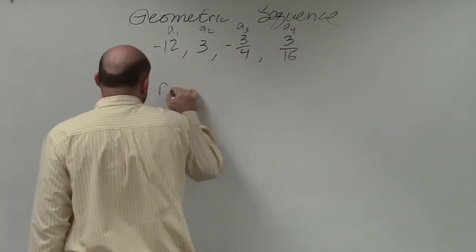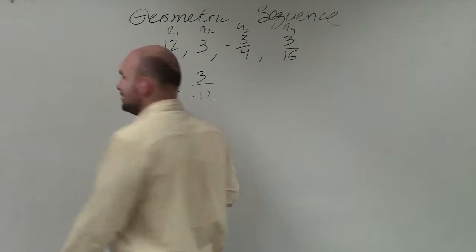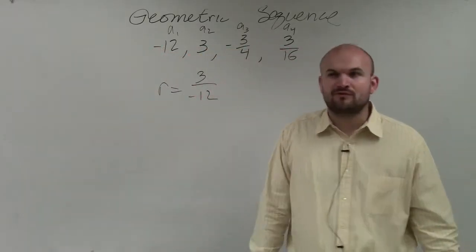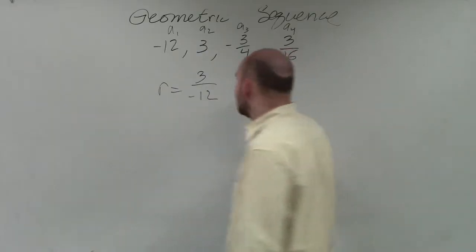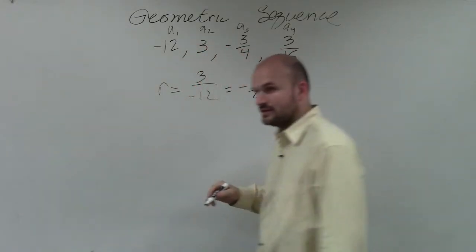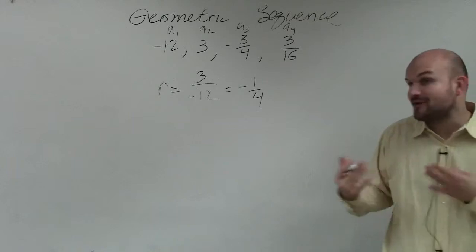So r equals a2 over a1. And guess what? I don't want to do anything with fractions. Now I see if I reduce this, it becomes negative 1 fourth. So my ratio is a fraction.